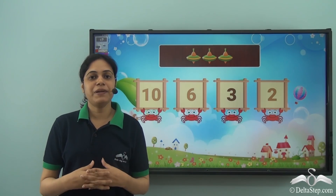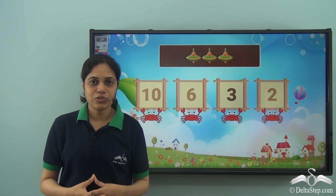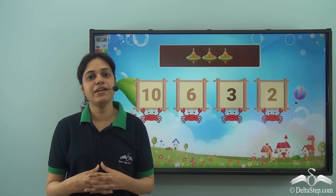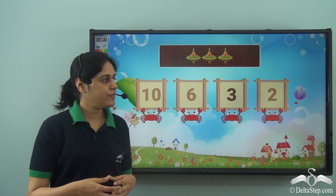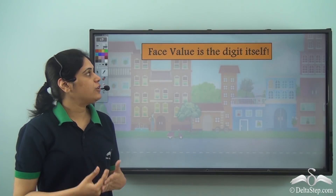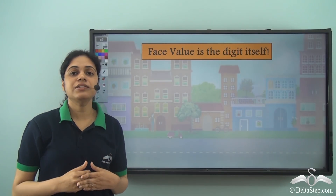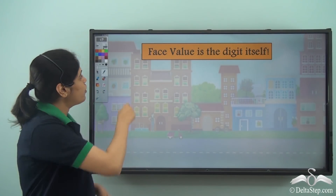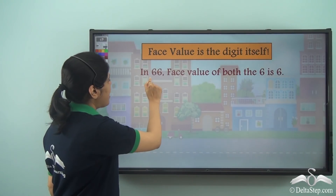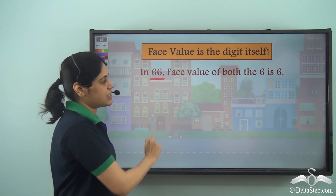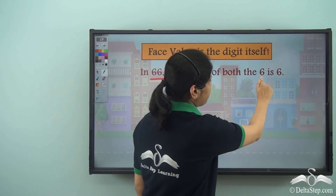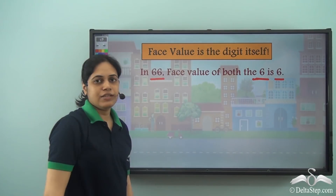We have learned the place values and face values of the digits in a number. What are they? Well, the face value is the digit itself. What do we mean by this? So if I have a number 66, the face value of both the sixes is 6.